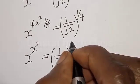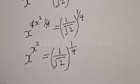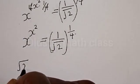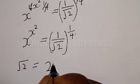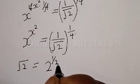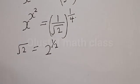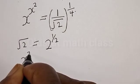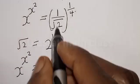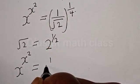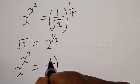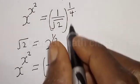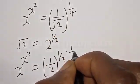We have x raised to power x squared is equal to 1 divided by root 2, raised to power 1 divided by 4. Now remember that square root of 2 is the same thing as 2 raised to power 1 divided by 2. Then we have x raised to power x squared is equal to 1 divided by 2, raised to power 1 over 2, then multiplied by 1 over 4.